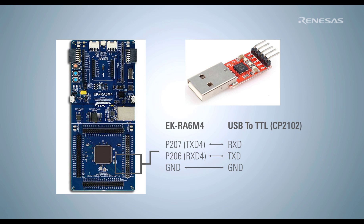Once we have uploaded our program, we can connect the EK board to our computer using a TTL-to-USB adapter. We can use any generic USB-to-TTL adapter; for this demo we are using the CP2102 model. For this adapter module we need to connect the TX pin of the EK board to the RX pin of the adapter, and vice versa.